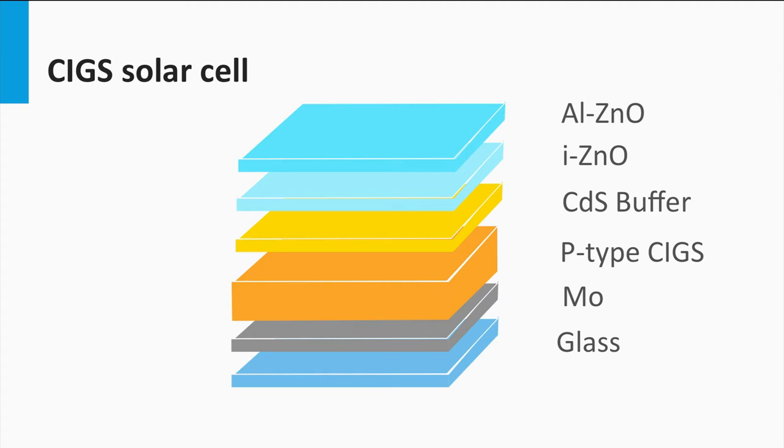Similar to some concepts of the thin film silicon technology, the aluminum doped zinc oxide acts like a transparent front contact for the solar cell. On top of this transparent conductive oxide, anti-reflective coatings can be placed, as discussed for the crystalline silicon technology.